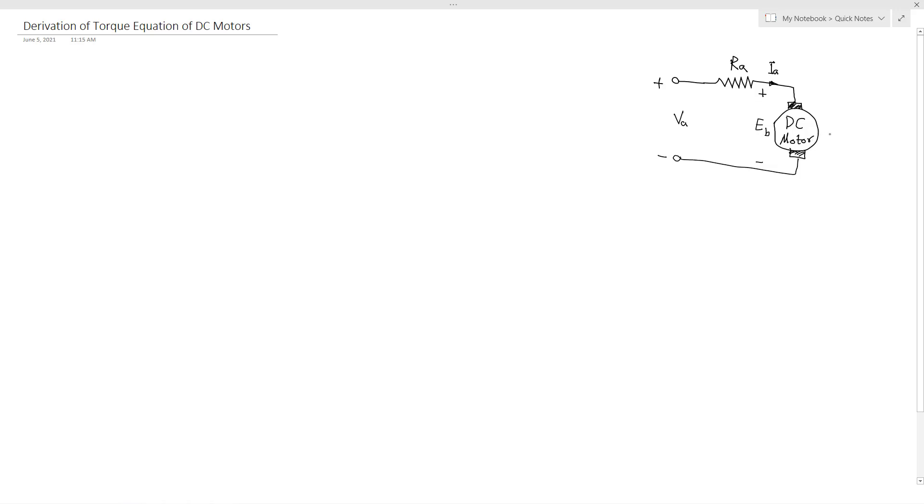And also the DC motor is connected to a load through a shaft. Here we have the coupler and this is the shaft. And we can say here the load. And these are brushes.